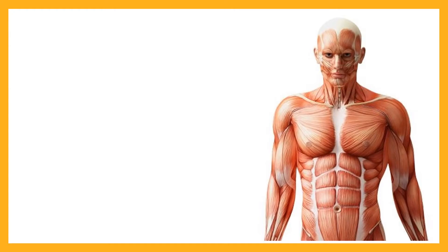We're starting at the front of the body — anteriorly means at the front — beginning with the shoulder. This large muscle on the side of the shoulder that wraps around the top is called the deltoid. You have one on either side, and they're loosely triangular shaped, which is where the name comes from: delta in Greek is a triangle. The deltoid sits on top of the arm and allows you to abduct the arm. We sometimes refer to three parts: the anterior deltoid, the medial deltoid, and the posterior deltoid.